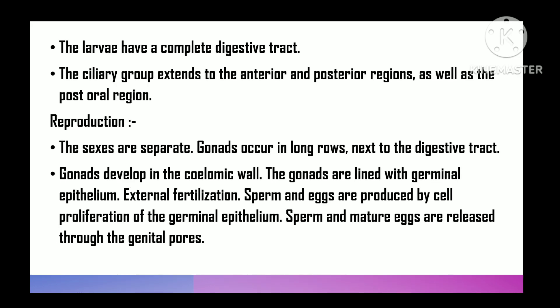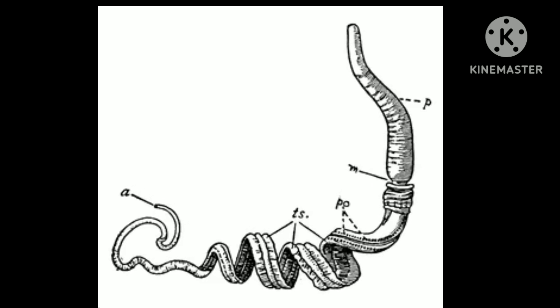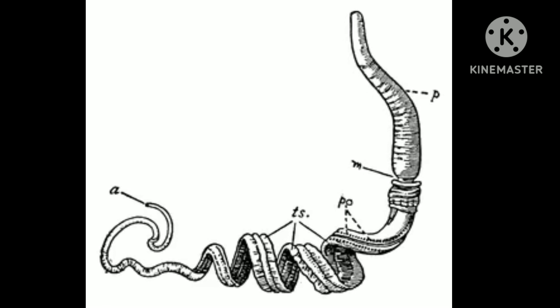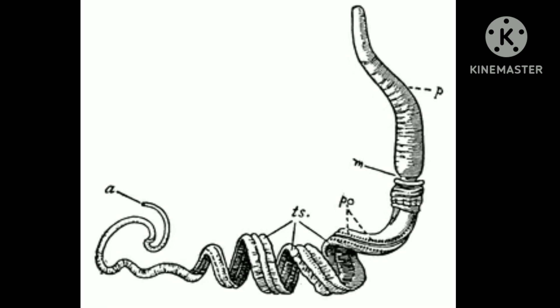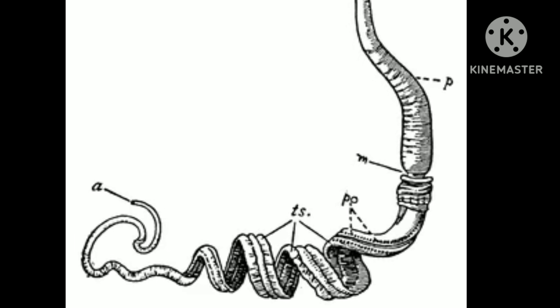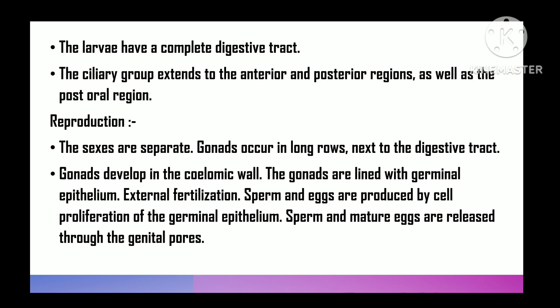Sexes are separate. Gonads occur in longitudinal rows on the side of the alimentary canal and develop in the coelomic wall. Sperms and ova are produced by the proliferation of cells from the germinal epithelium. Mature sperms and ova are discharged outside through the genital pore. Fertilization is external.